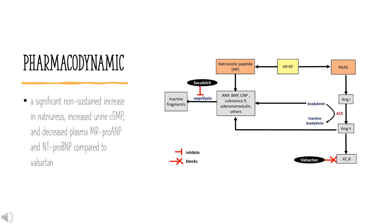Pharmacodynamics: In a 7-day valsartan-controlled study in patients with reduced ejection fraction (HFrEF), administration of Secubitril plus valsartan (Entresto) resulted in a significant non-sustained increase in natriuresis, increased urine cGMP, and decreased plasma MR-pro-ANP and NT-proBNP compared to valsartan. In a 21-day study in HFrEF patients, it significantly increased urine ANP and cGMP and plasma cGMP, and decreased plasma NT-proBNP, aldosterone, and endothelin-1. In clinical studies, this combination had no effect on QTc interval.